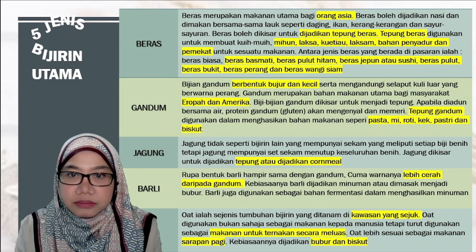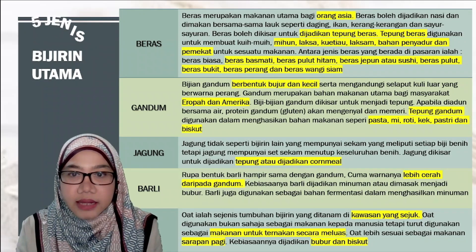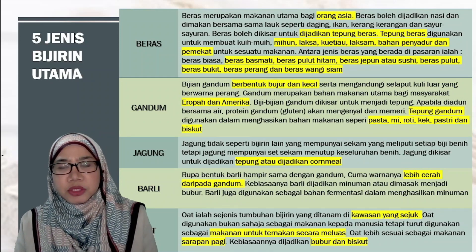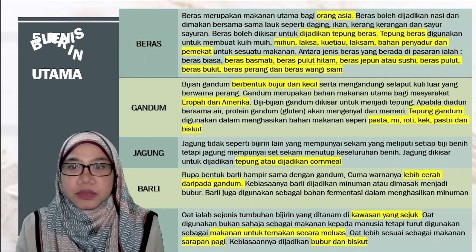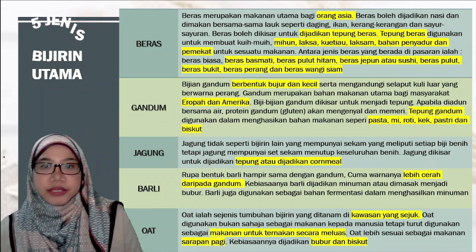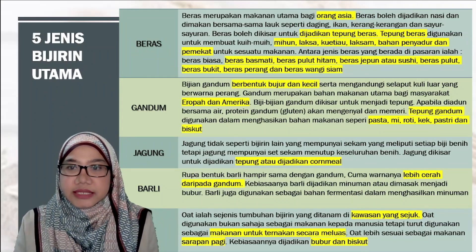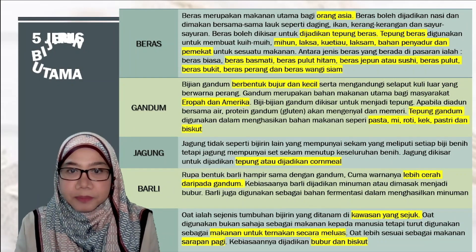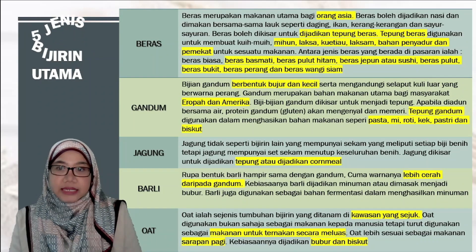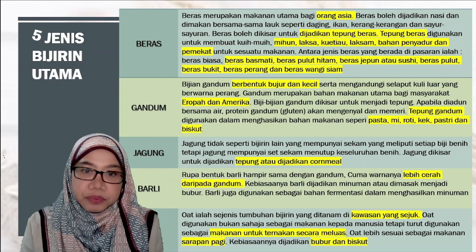Gandum merupakan makanan utama masyarakat Eropah dan Amerika. Biji gandum berbentuk bulat dan kecil, mengandungi serabut di luar yang berwarna perang. Biji-bijian gandum dikisar dan menghasilkan tepung gandum. Daripada tepung gandum boleh menghasilkan pasta, roti, kek, pastri dan biskut.